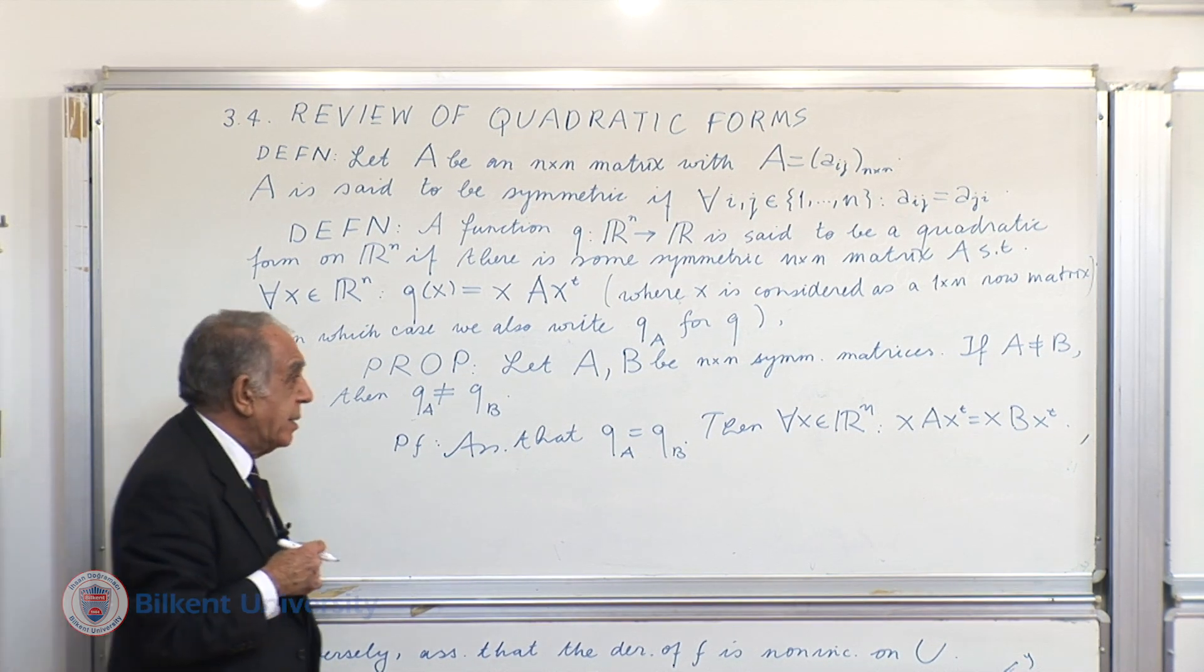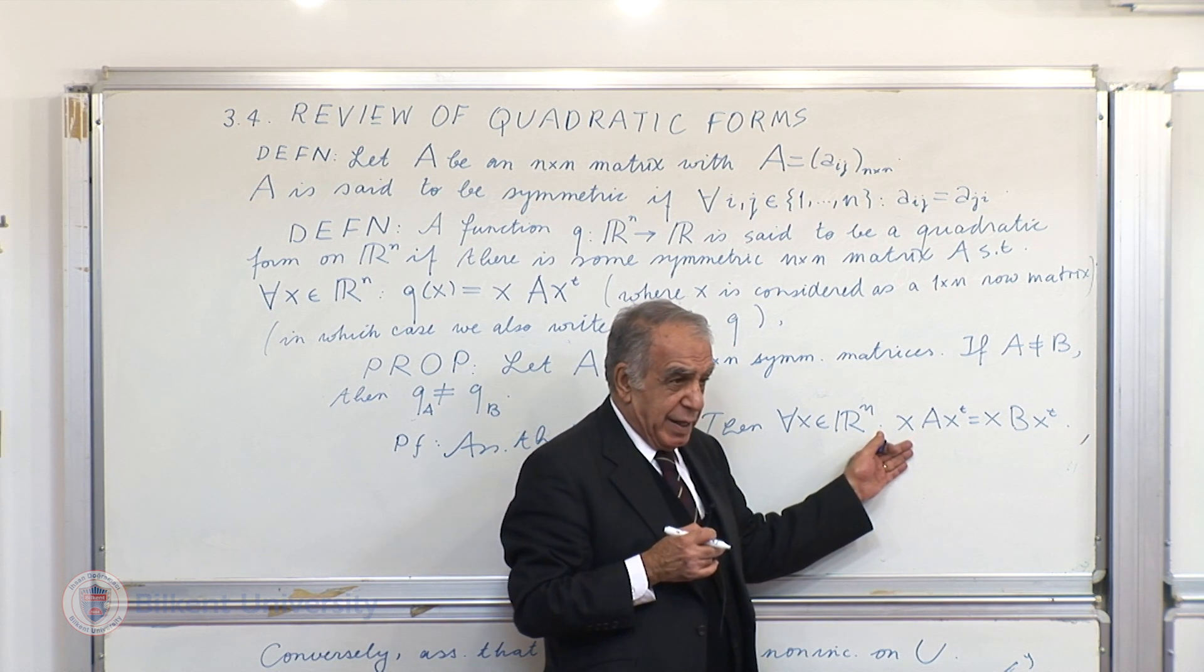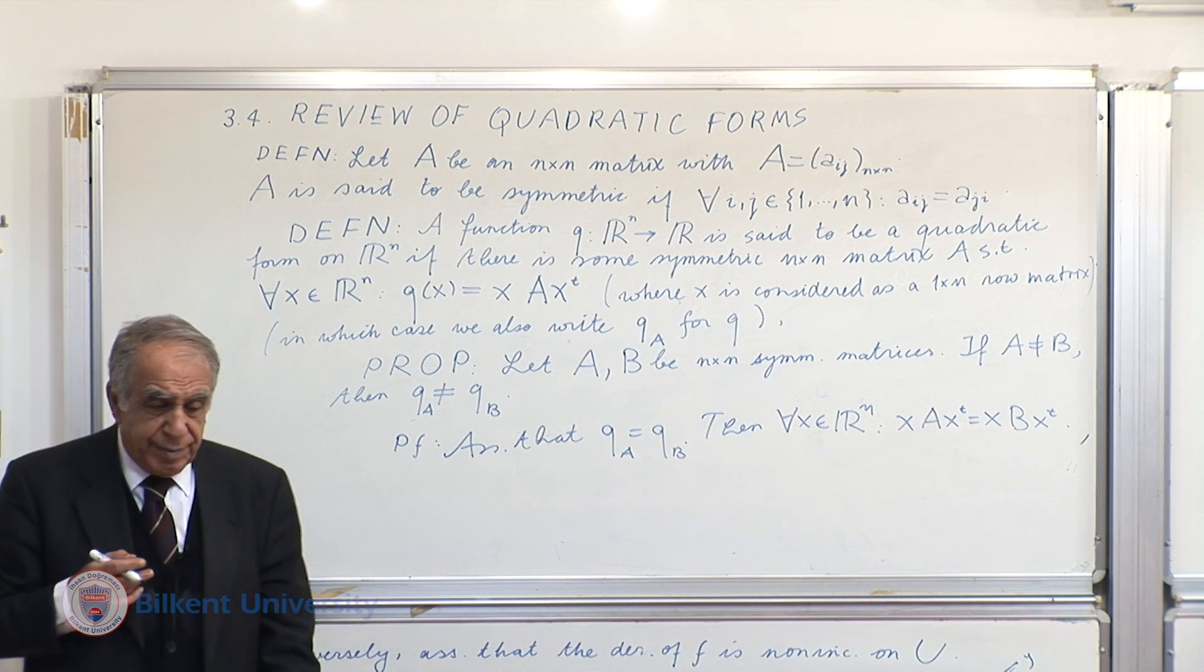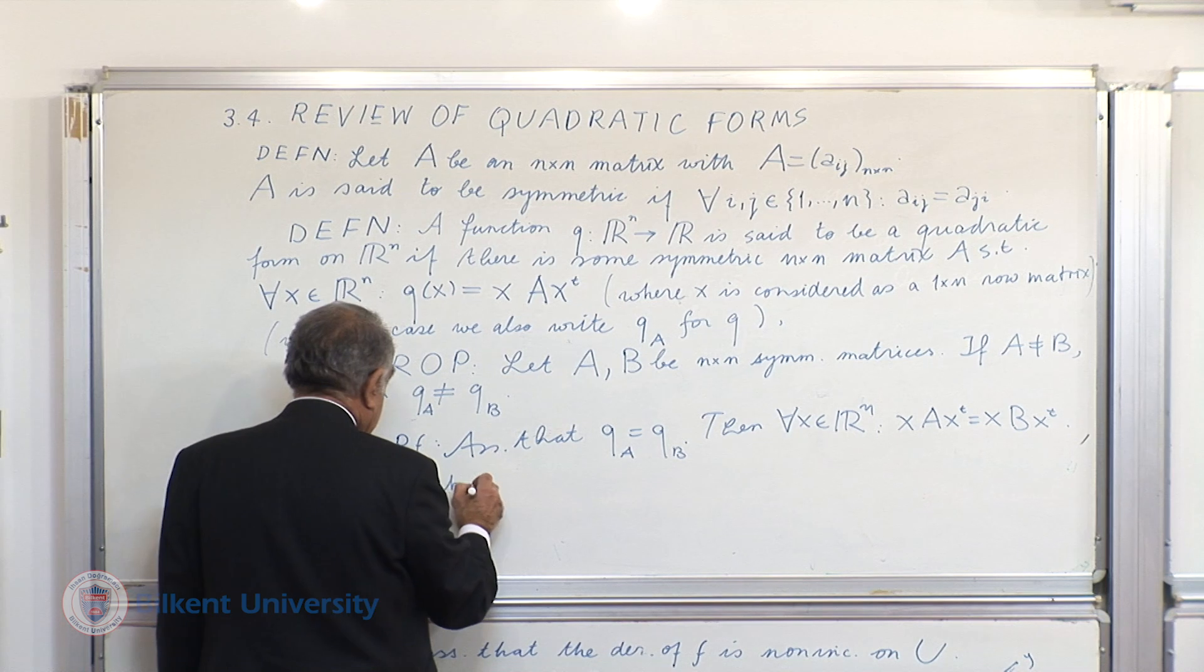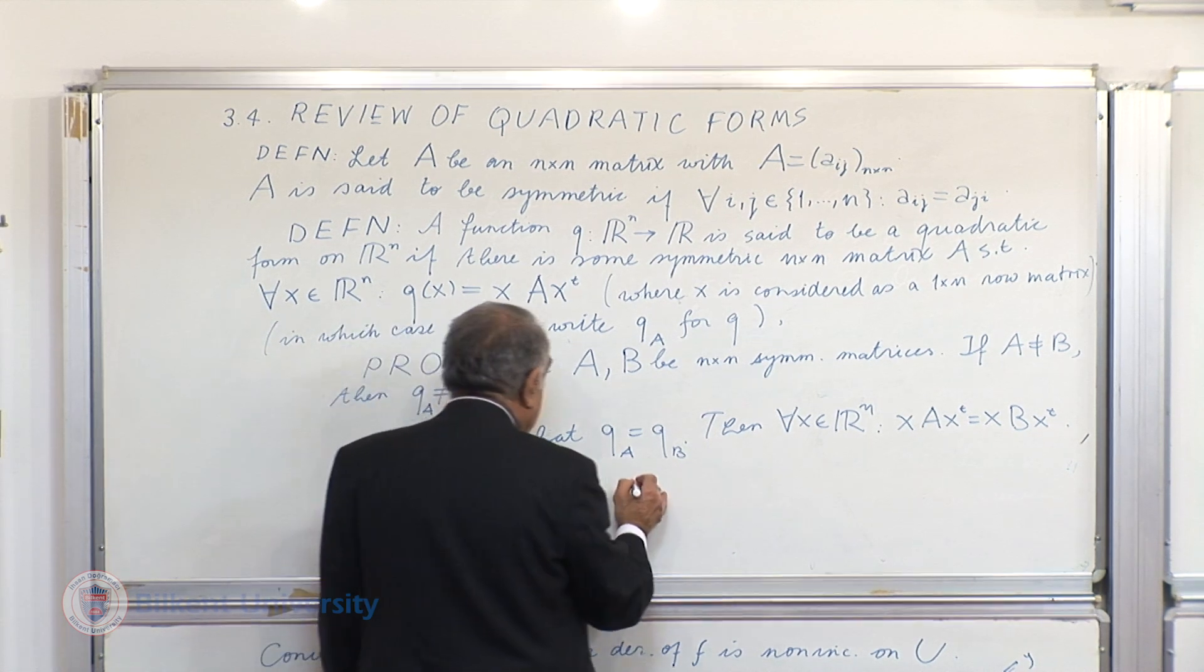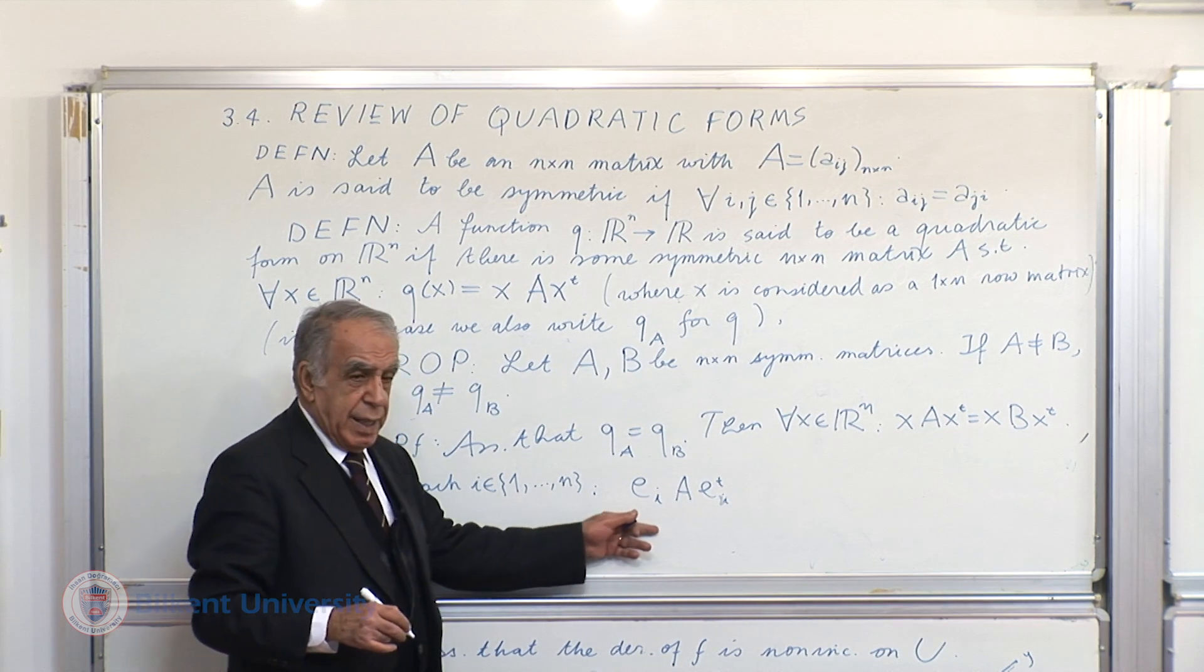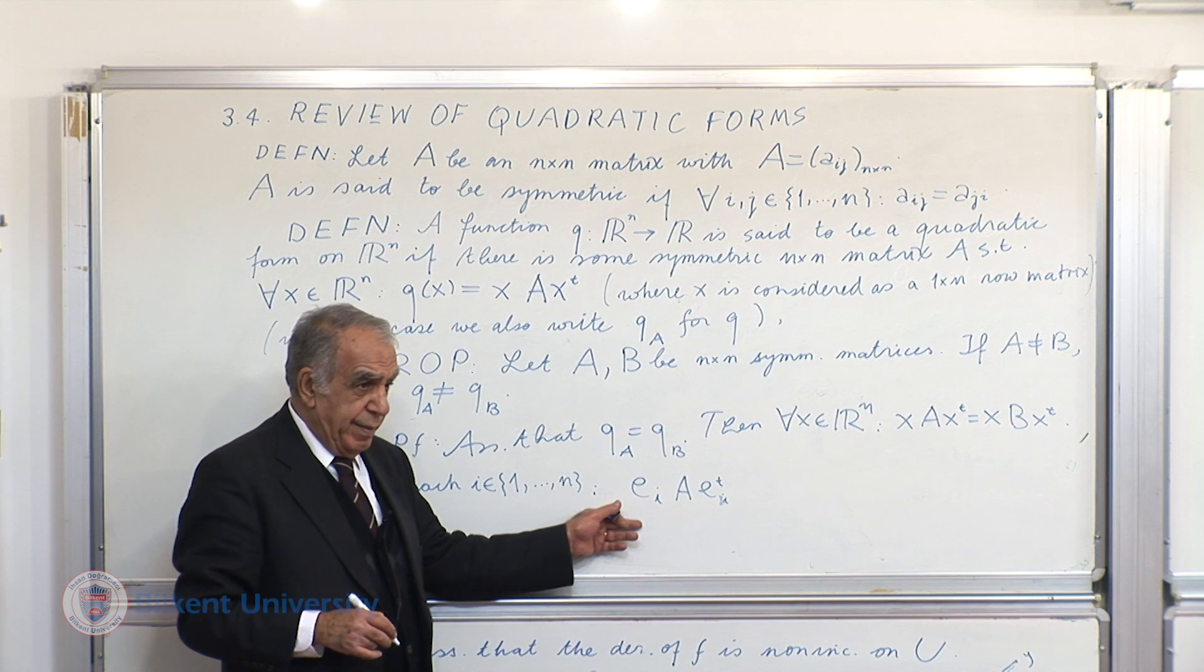That is, for all x in R^n. So, x A x transpose equals x B x transpose. Now, we will show that this implies A is equal to B. Then, it is useful to choose particular special values of x. Now, of course, one special value will be provided by the standard basis vectors of R^n. Now, for each i in the set from 1 to n is e_i A e_i transpose. What's that?